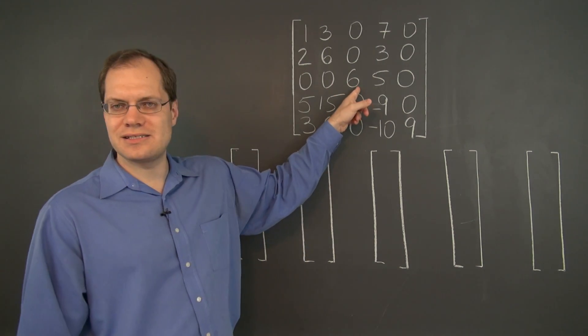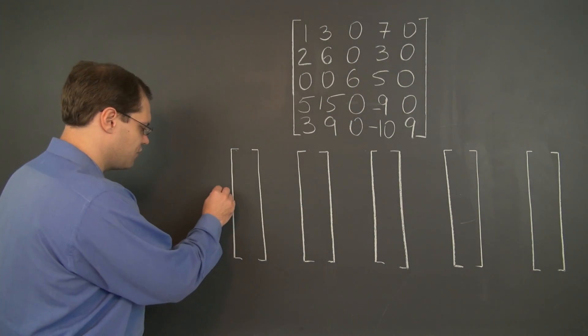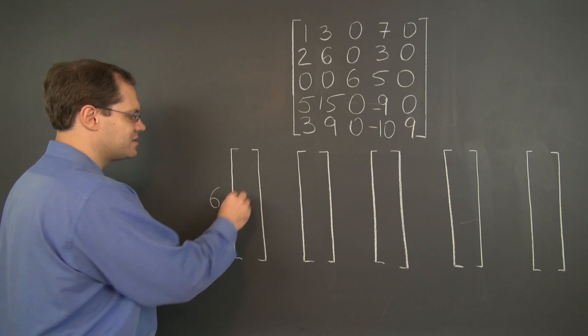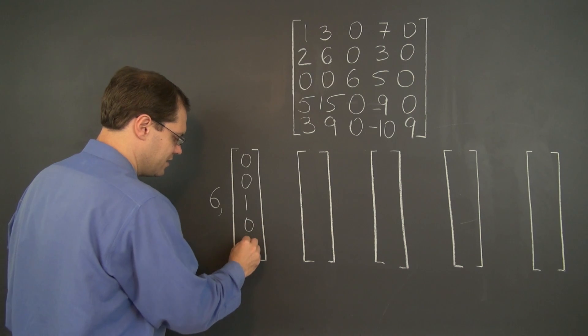The first thing I see is this 6 is alone in its column and it's on the diagonal. So the first eigenvalue is 6 and the corresponding eigenvector is 00100.